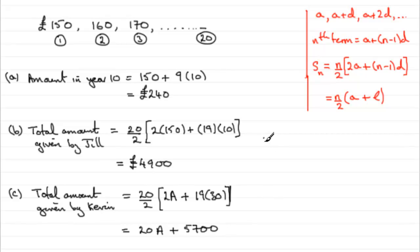Now, we're told that Kevin, then, puts twice the amount that Jill has to the charity. So, we can say that, therefore, Kevin's amount, 20a plus 5,700, must be equal to 2 times the 4,900.